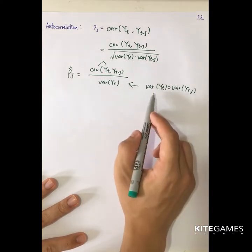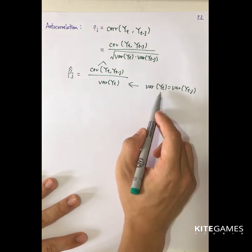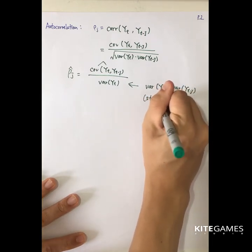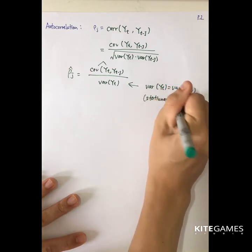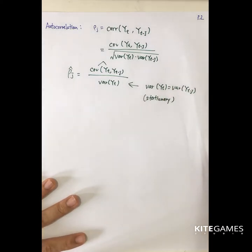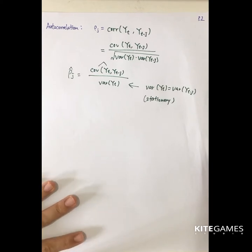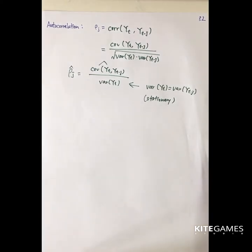This assumption — that the variance of the value at different time periods are equal — is one of the basic assumptions in the time series model. We call this stationarity. We will cover the concept of stationarity at a later stage. Most econometric time series models assume that the data are stationary, meaning the distribution at different periods is the same.